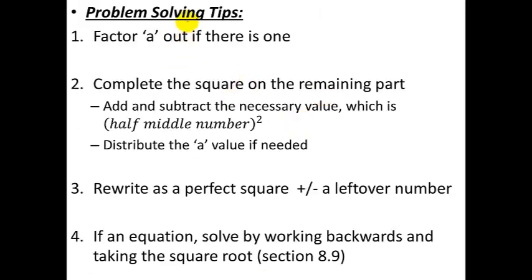First thing you need to do: factor out the a — that's the leading coefficient. So if your quadratic starts with just x squared, you don't have to do this step. But if it's like 3x squared or 5x squared or any other coefficient in the front, you need to factor that out. Second, add and subtract the necessary value to complete the square, which is half the middle number squared.